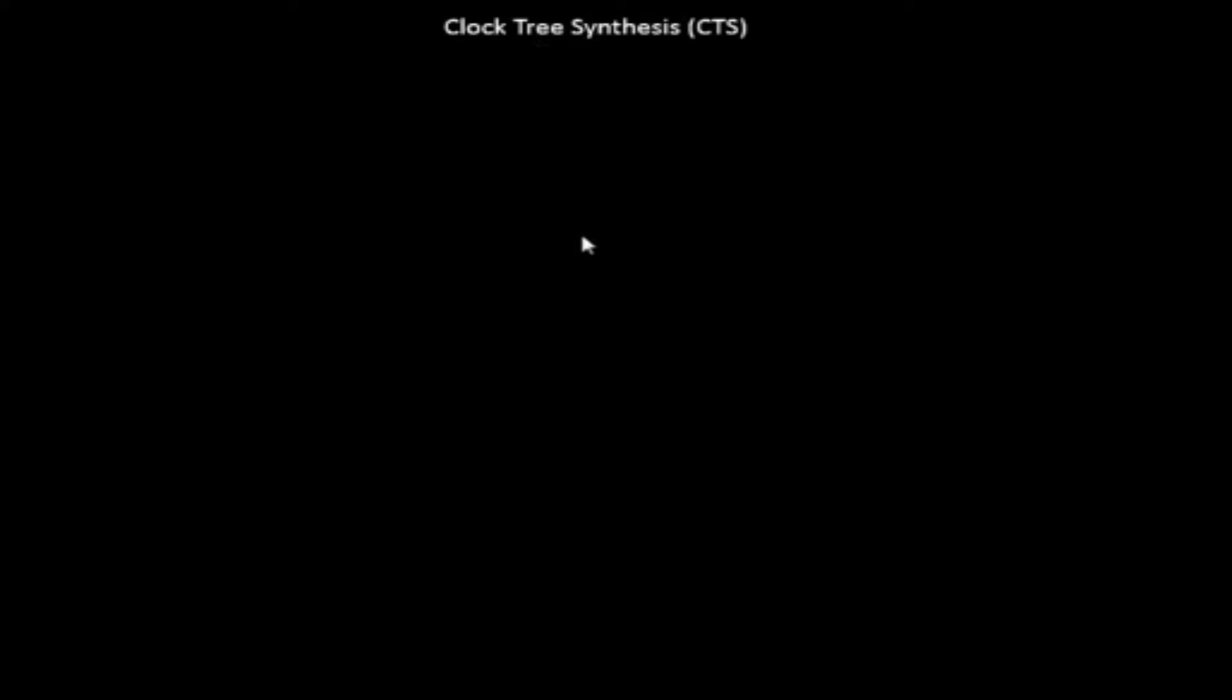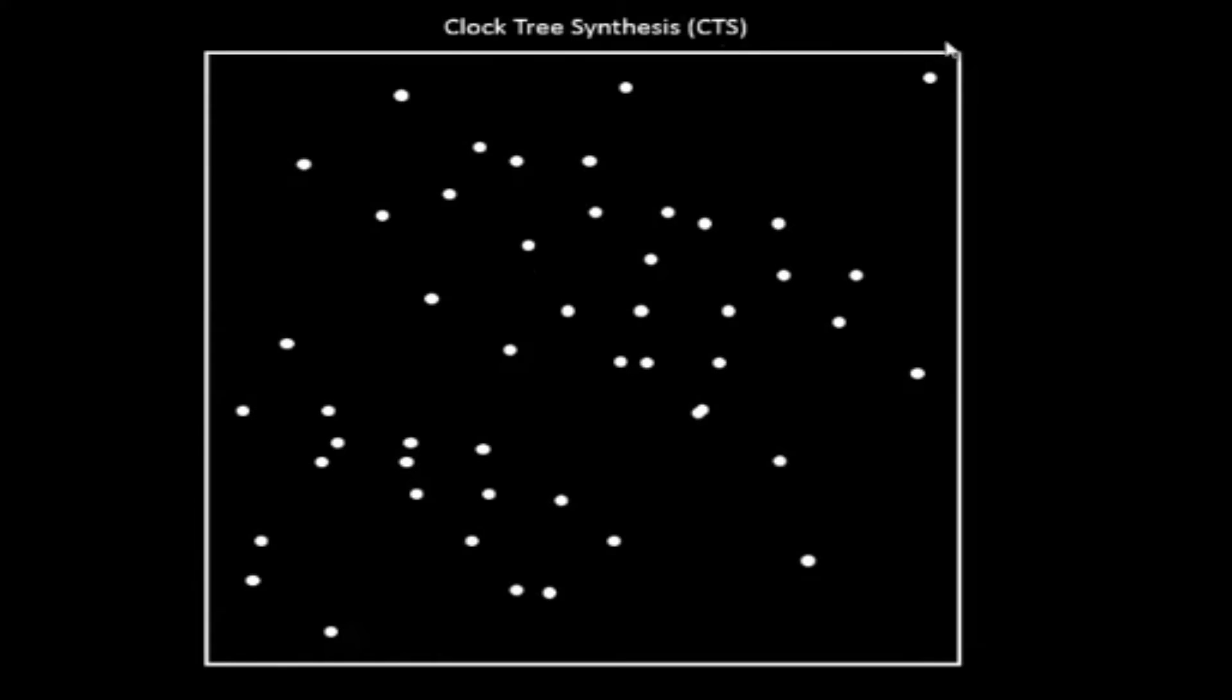For example, when we say clock tree synthesis, it actually means the following. So we have this complete chip, we have a square chip. Usually when you open up a mobile phone or any device, you see a square shaped chip. It could be a rectangle also, but let us generalize things and keep a square shaped chip over here.